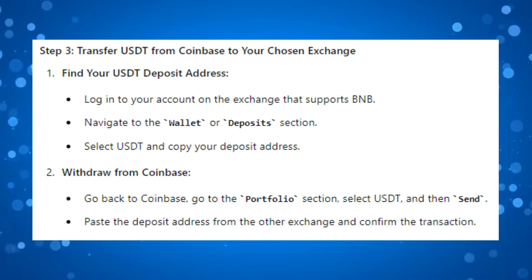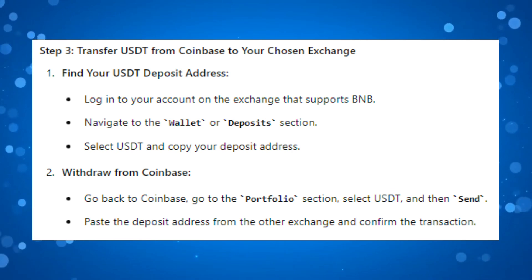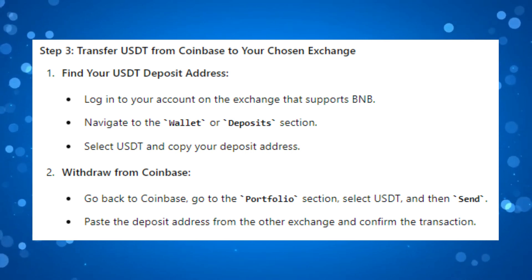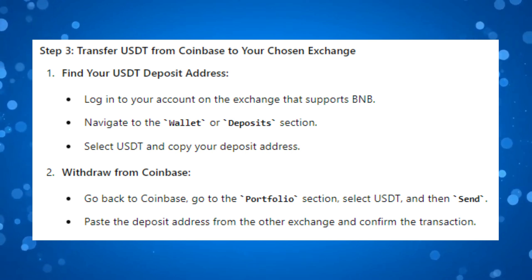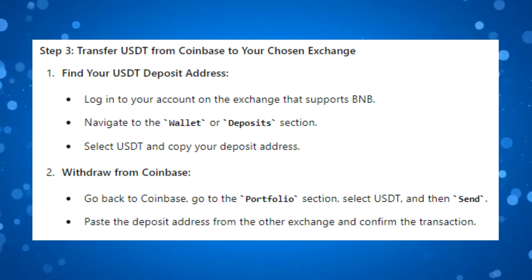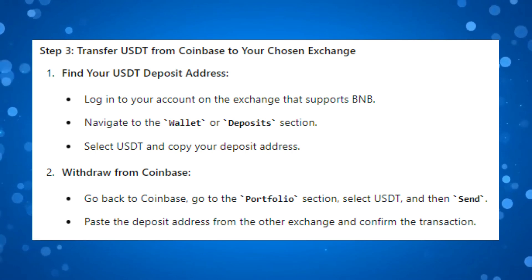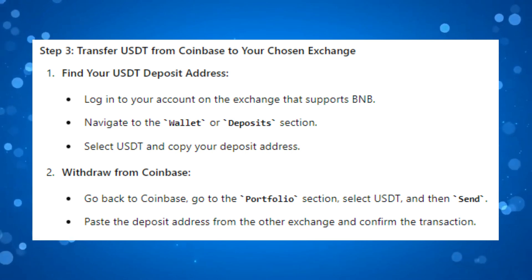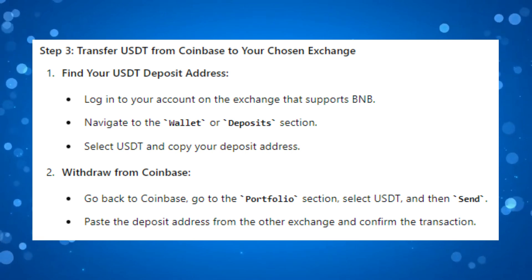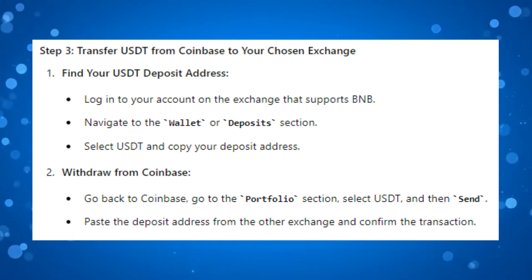After doing this, you are going to want to transfer your USDT from Coinbase to your chosen exchange. First, find your USDT deposit address by logging into your account on the exchange that supports BNB, navigating to the wallet or deposit section, and selecting USDT — you should see your deposit address. Copy that address, then go back to Coinbase, go to the portfolio section, select USDT and then Send. Paste the deposit address from the other exchange into the box that appears, and confirm the transaction.